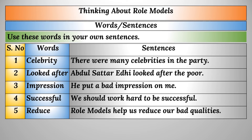Now, words and sentences. Word one: 'celebrity' — There were many celebrities in the party. Next: 'looked after' — Abdus Sattar Edhi looked after the poor people. 'Impression' — He put a bad impression on me. 'Successful' — We should work hard to be successful in life. 'Reduce' — Role models help us reduce our bad qualities.